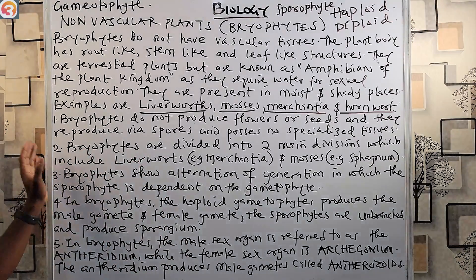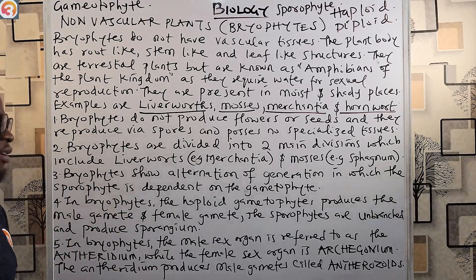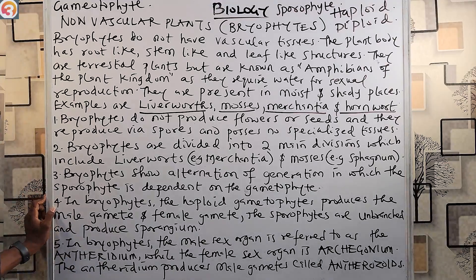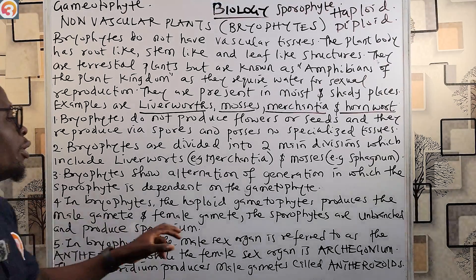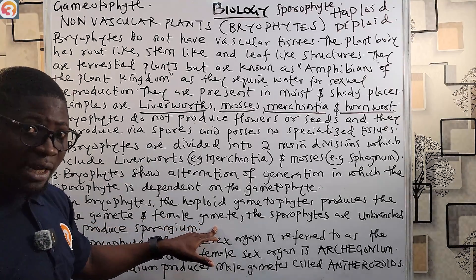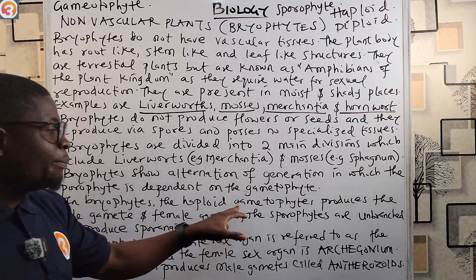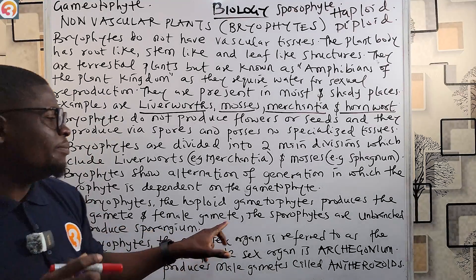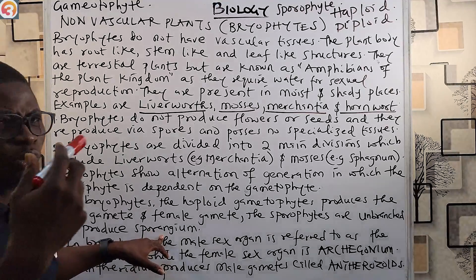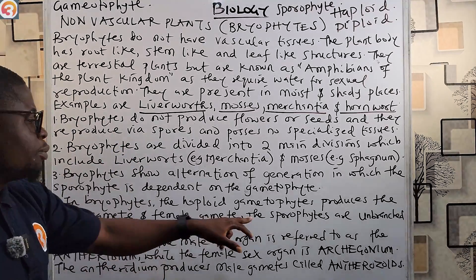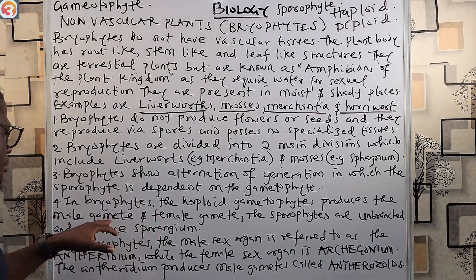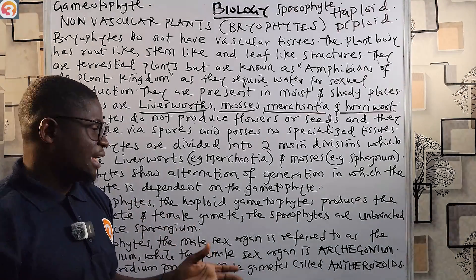In bryophytes, the haploid gametophyte produces the male gamete and female gamete, while the sporophyte is unbranched and produces the sporangium — what we call the spores. The gametophyte produces the gametes — both male and female.